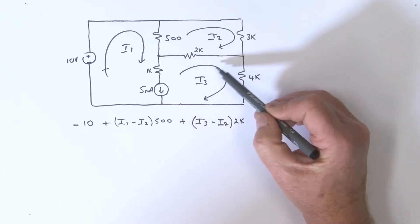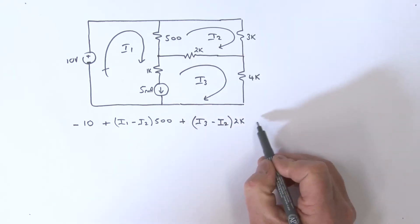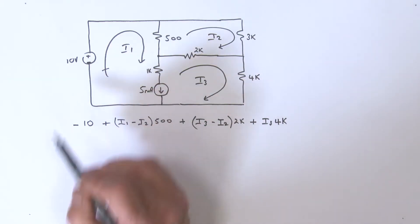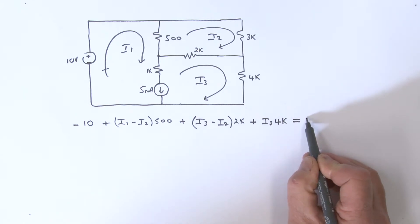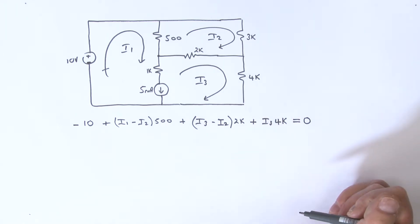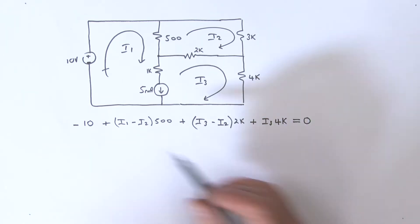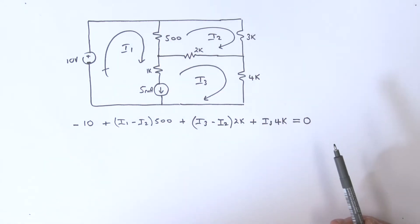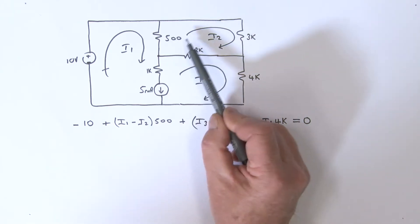Following on, we have the 4k resistor, so we have a plus i3 times 4k. We're back at the beginning again, so all of that equals zero. That's the i1-i3 mesh looping around. Another equation can...